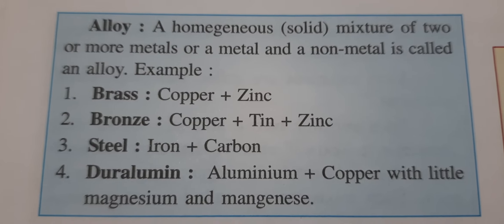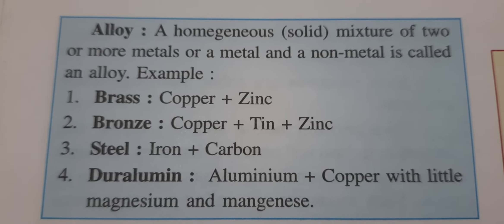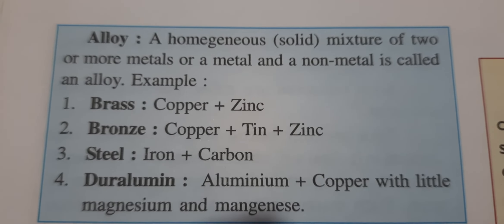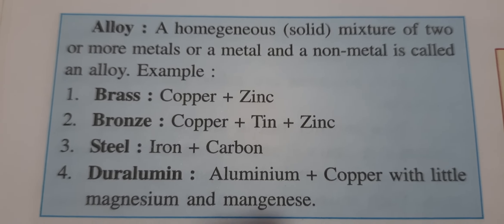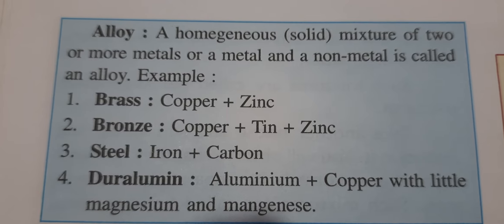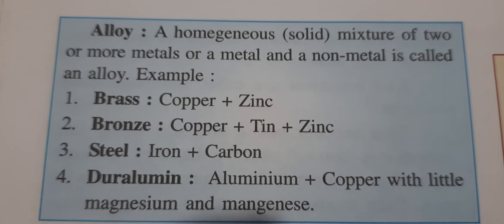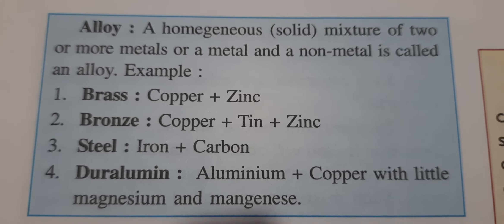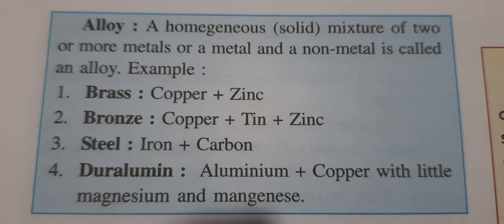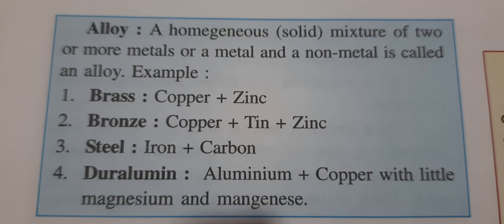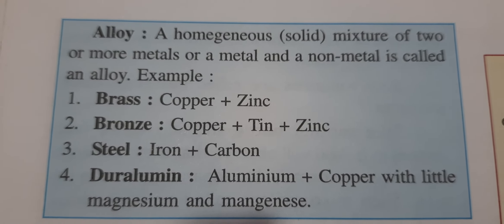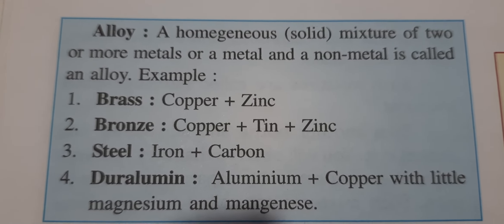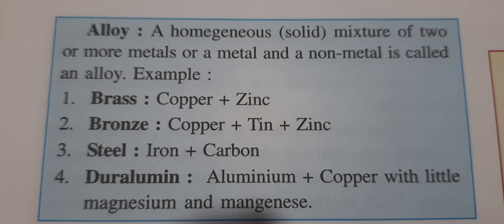Bronze is again a mixture. Bronze metal is not one single metal — it is a combination of three metals: copper, tin, and zinc. But we cannot see all these three metals separately with the naked eye.